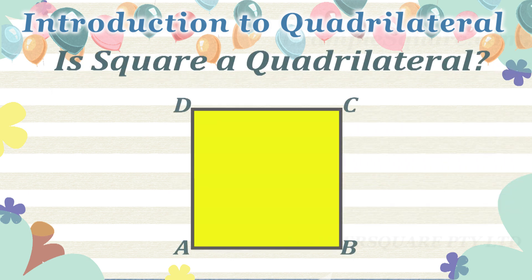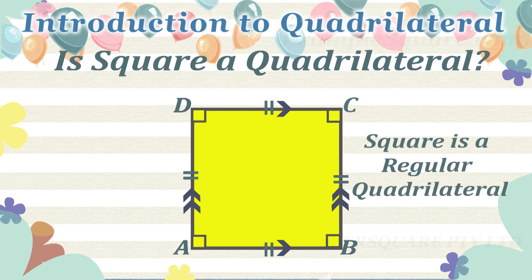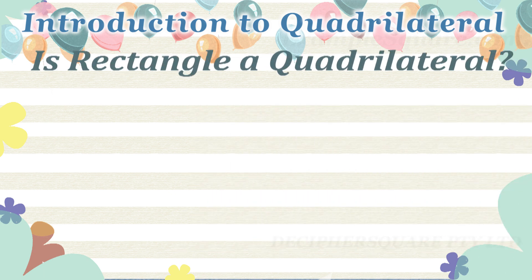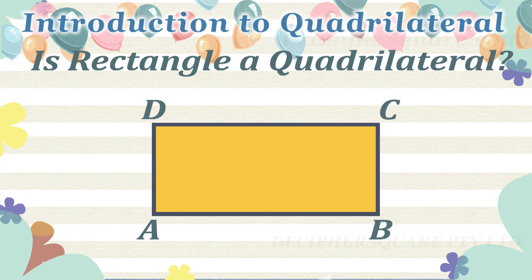Is a square a quadrilateral? Yes, a square is a specific type of quadrilateral in which all four sides are equal and all four interior angles are equal. In a square, opposite sides are also parallel. Since all sides and interior angles of a regular polygon are equal, a square is a regular quadrilateral.